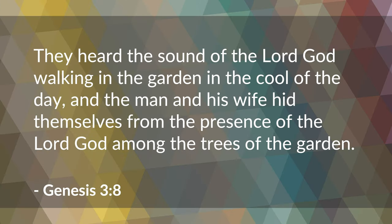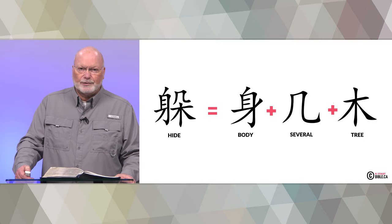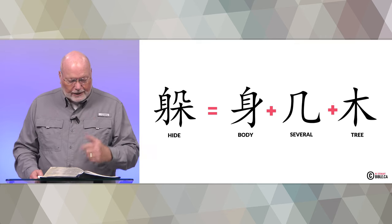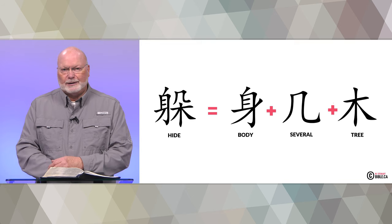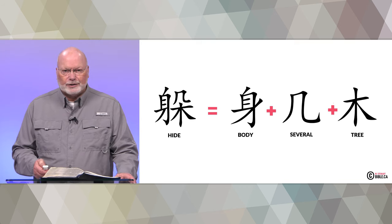Genesis chapter 3 verse 8: 'The man and his wife hid themselves from the presence of the Lord God among the trees of the garden.' This Chinese character representing 'hide' is made up of three characters: a body, several, and trees. So here are Adam and Eve hiding their bodies among several trees. They heard God walking in the cool of the day and were afraid because they had eaten the forbidden fruit and hid themselves among the many trees — exactly what Genesis 3 tells us, and what this Chinese character represents.